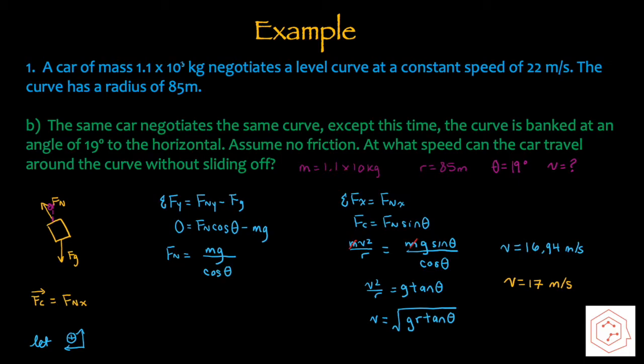For part B, the same car negotiates the curve, except this time the curve is banked at an angle of 19 degrees to the horizontal. Assume no friction. At what speed can the car travel around the curve without sliding off? We know mass, radius, and theta equals 19 degrees, and we're solving for speed. Drawing the free body diagram, we know there's no friction force, so the only forces acting are the normal force and gravitational force. Since this is a banked curve, the normal force is pointing upwards and diagonally inwards at an angle of theta.